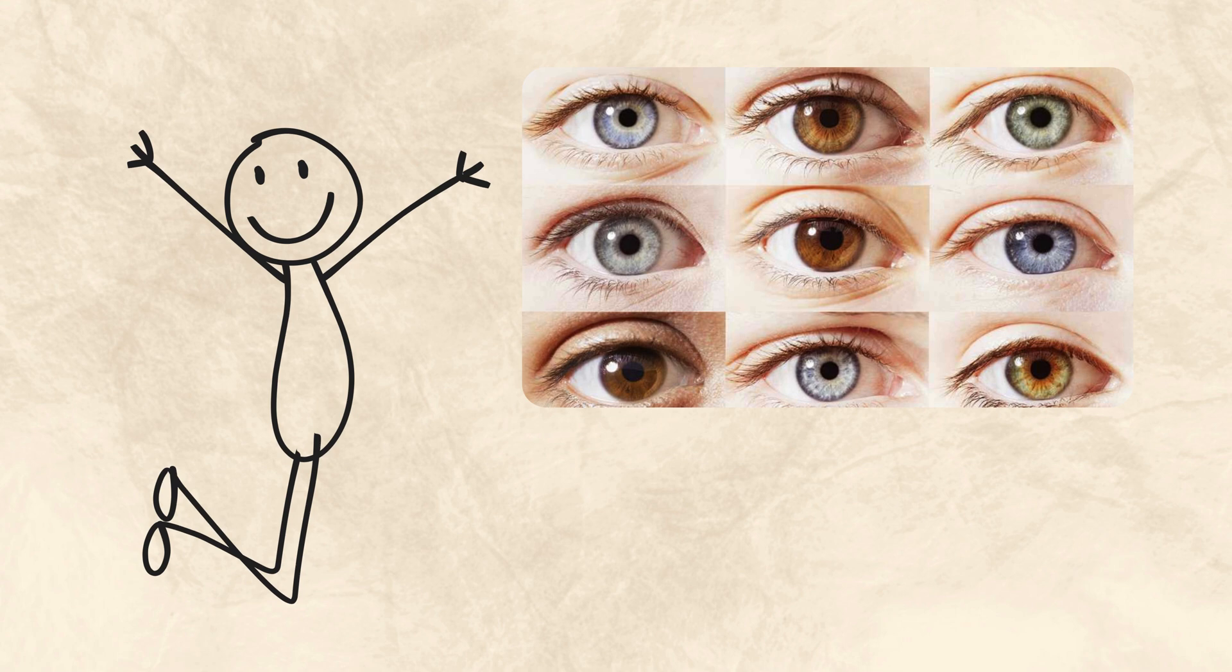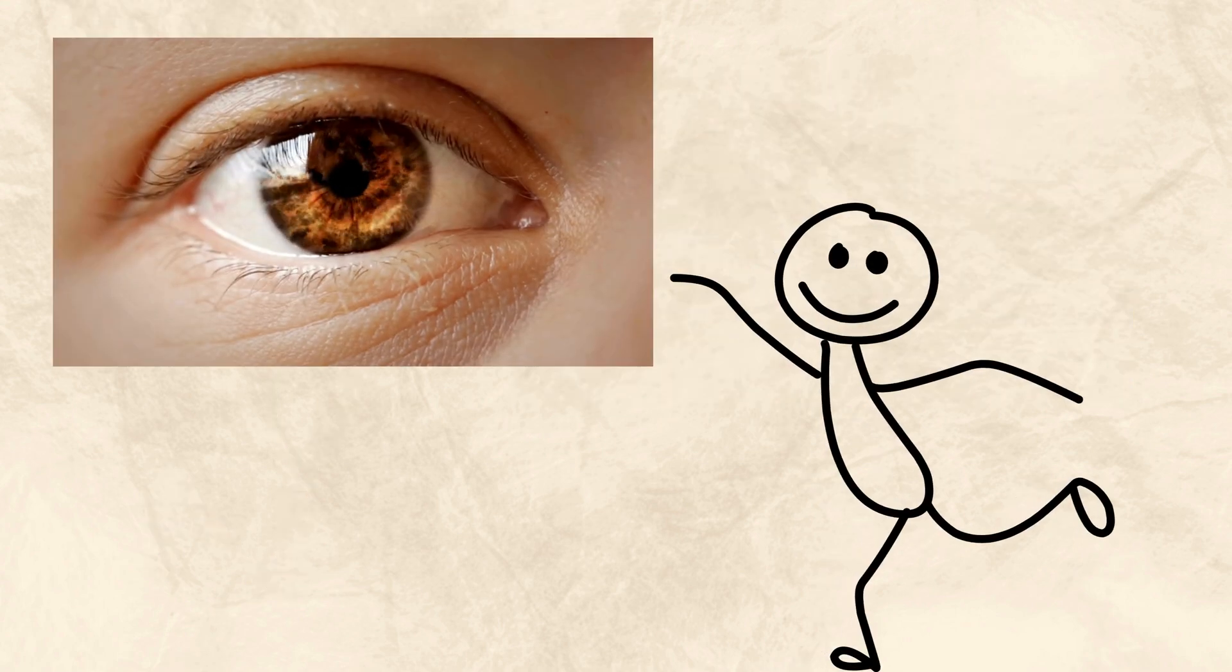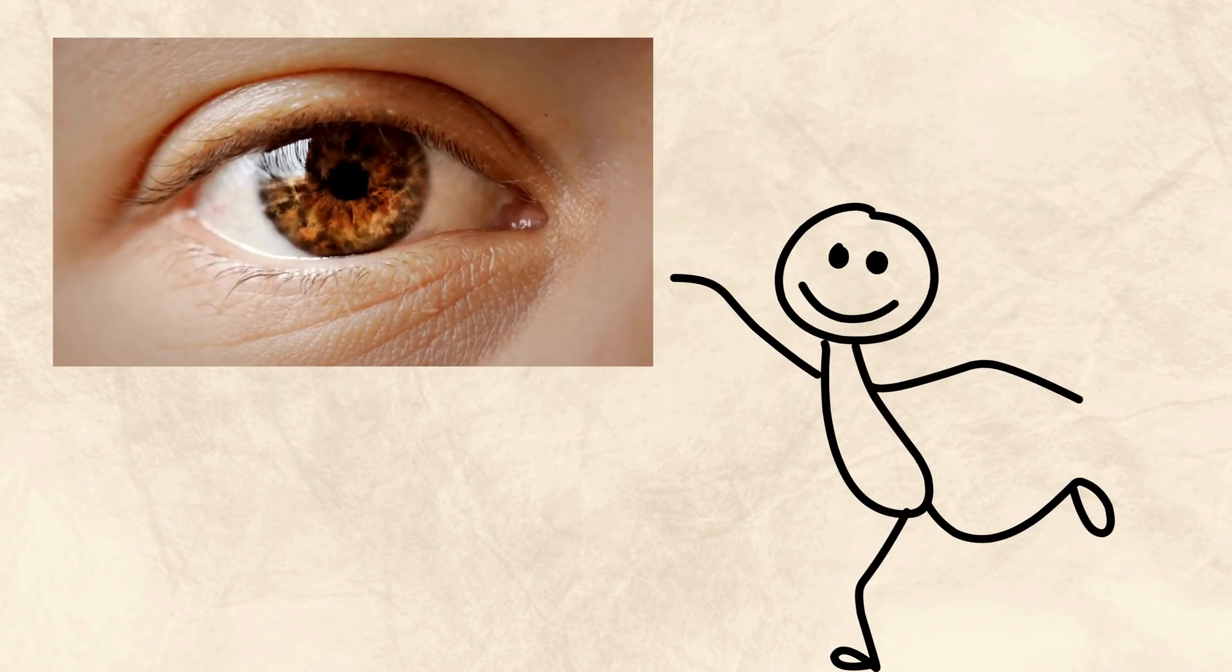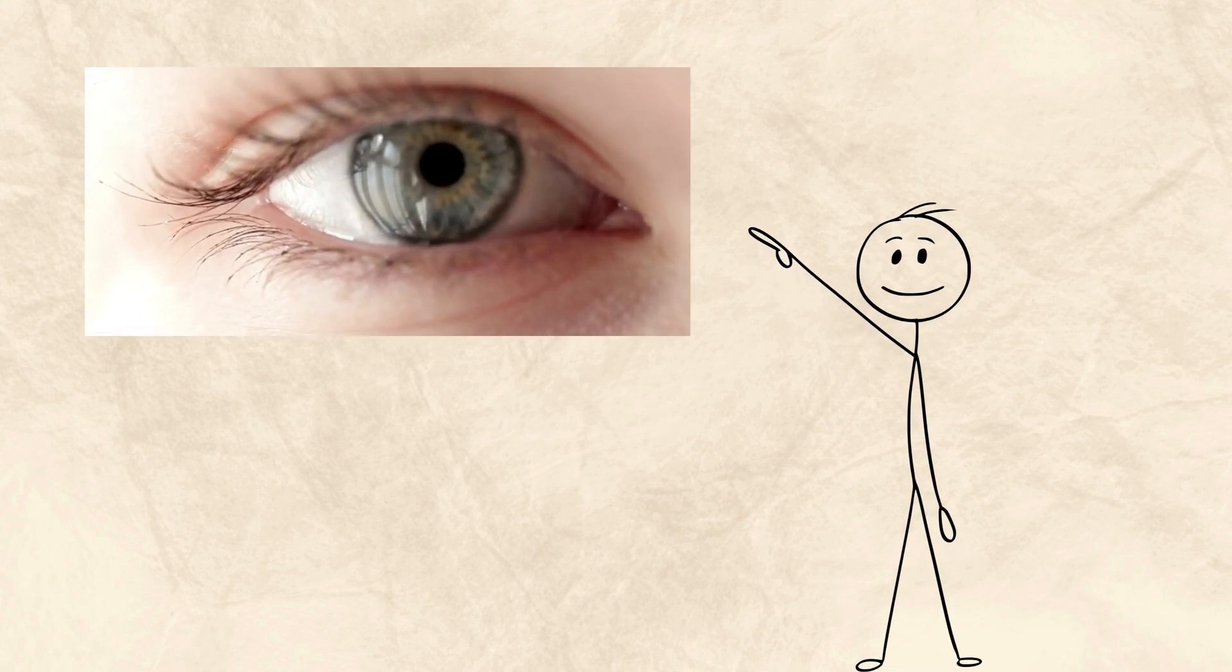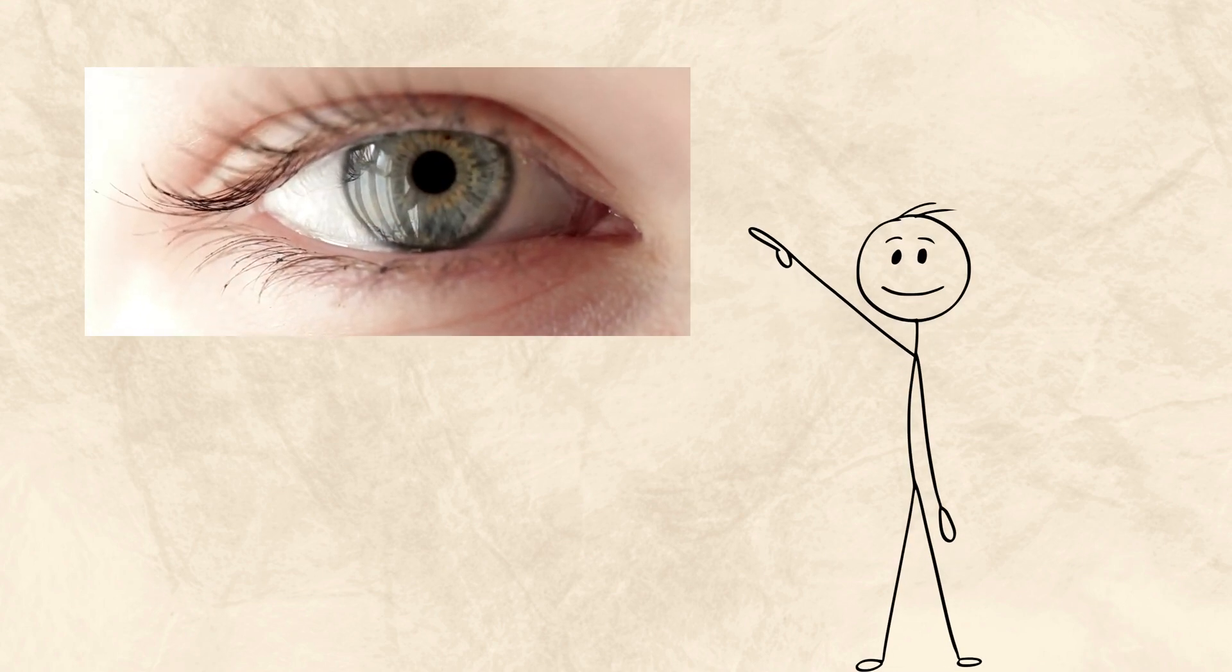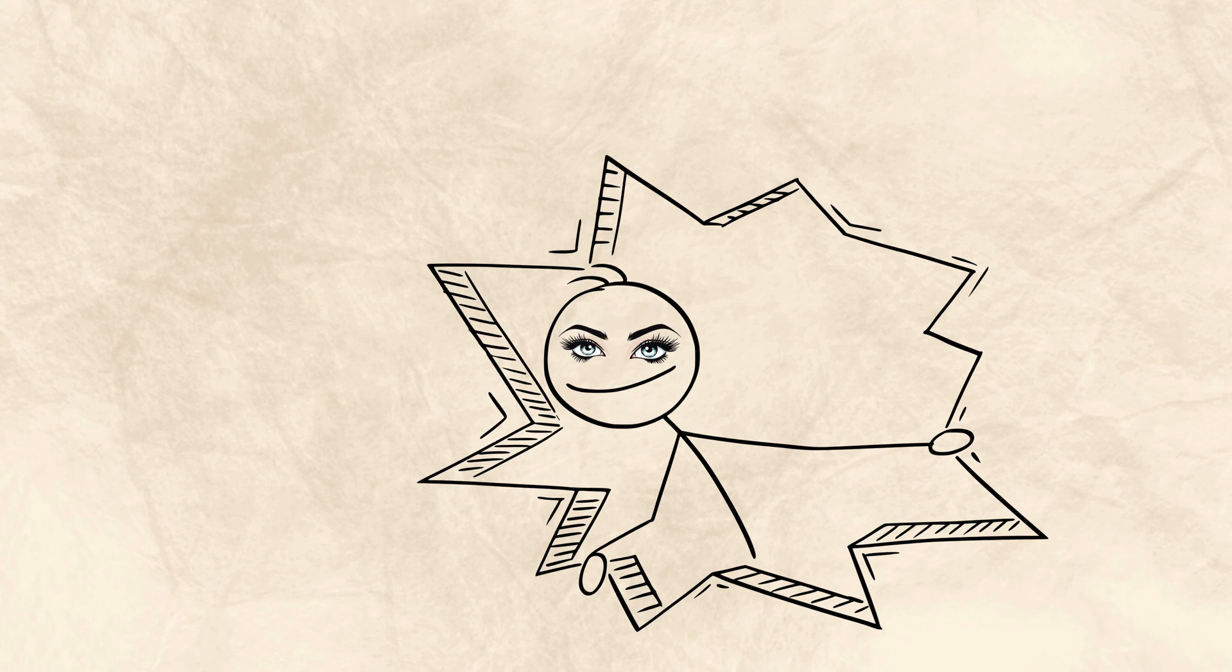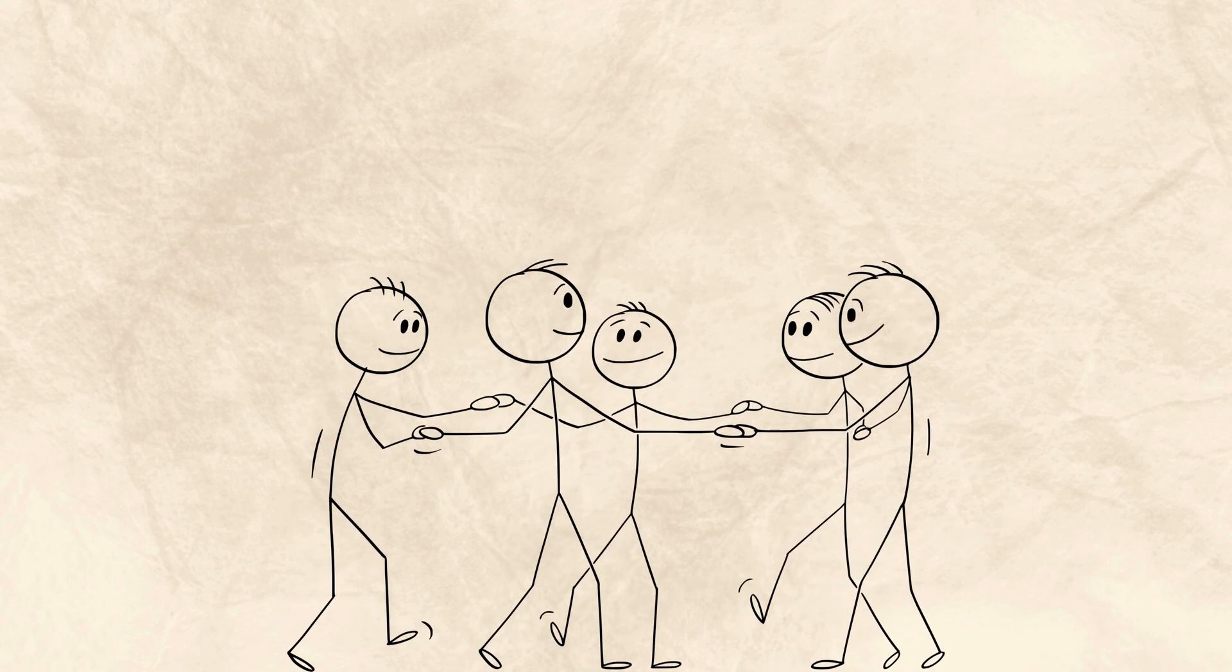Eye color is not just about appearance. It is about light, evolution, and how we carry the past. Whether your eyes are brown or gray or green or something in between, they are unique. They do not only help you see the world. They also help the world see you.